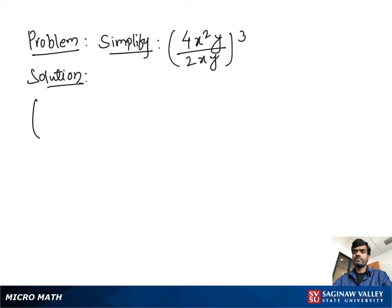Simplify 4x² y divided by 2xy, all to the third power. First we work inside the parentheses: 4 divided by 2 is 2, x² divided by x is x, and y divided by y is 1.